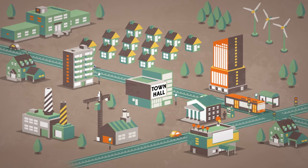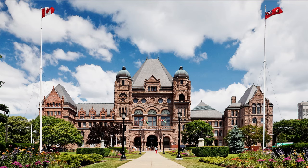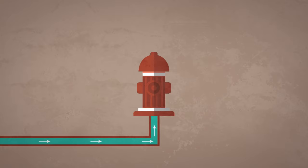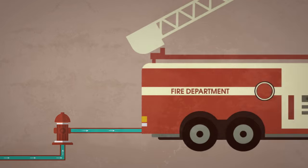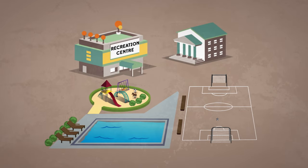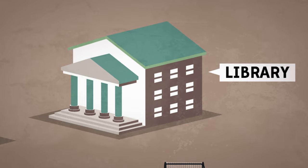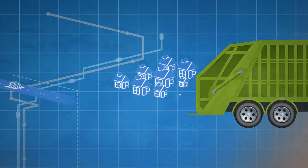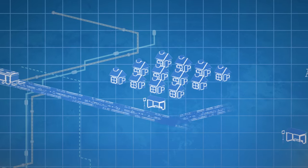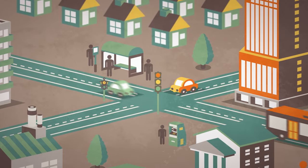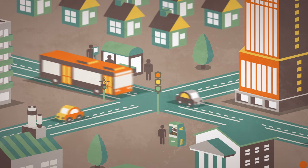Municipal governments actually receive their powers from the provincial government. They are responsible for local and everyday matters, such as water, fire protection, policing, parks, community and recreation centers, libraries, garbage and recycling, land use and planning, roads and sidewalks, transportation systems, and much more.